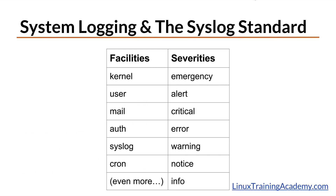The syslog standard uses facilities and severities to categorize messages. Facilities are used to indicate what type of program or what part of the system the message originated from. For example, messages that are labeled with a kernel facility originate from the Linux kernel. Severities, on the other hand, are used to categorize messages based on their urgency.